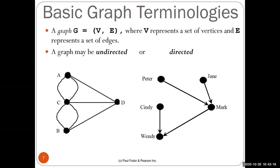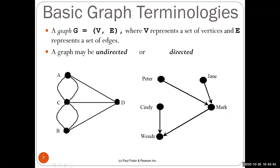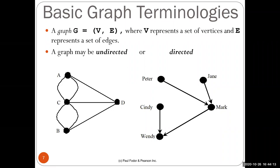Graphs can be undirected, meaning for any pair V1 to V2 in E, V2 to V1 also exists — direction doesn't matter. In directed graphs, like a 'likes' relationship on social media — Peter likes Mark, Jane likes Mark, Mark likes Wendy — it's not always the case that the relationship is reciprocal. Directed graphs represent a different kind of problem.